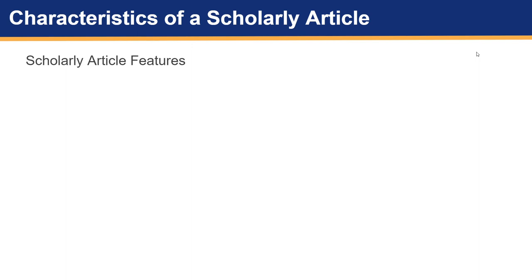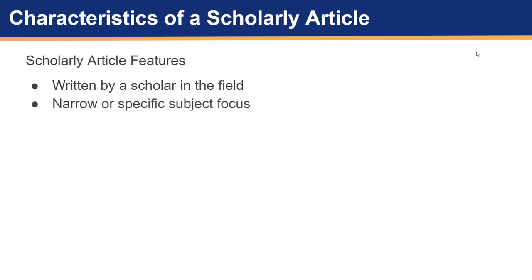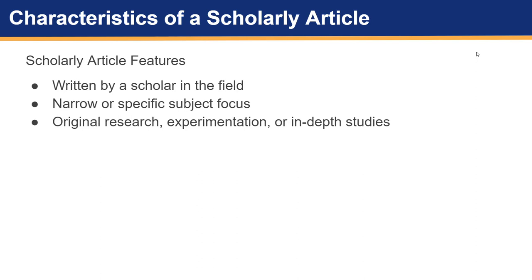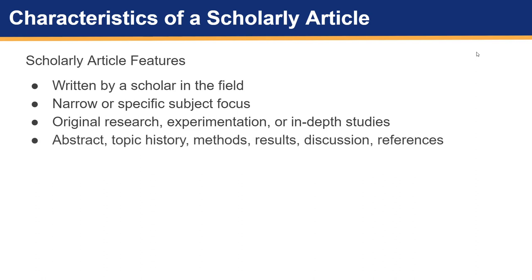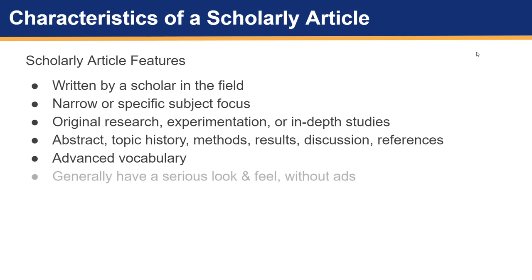You can also take a look at the characteristics of an article to evaluate it. Articles are written by a scholar or expert in the field. They usually have a narrow or specific subject focus. They contain original research, experimentation, or in-depth studies in the field. They often follow a format that includes an abstract, a brief history of the topic, methods, results including data, discussion of the findings, and references. They typically contain an advanced vocabulary since it is assumed that the reader possesses a basic understanding of the field of study. Scholarly journals generally have a serious look, lacking the advertising, want ads, and glossy pages found in popular magazines.